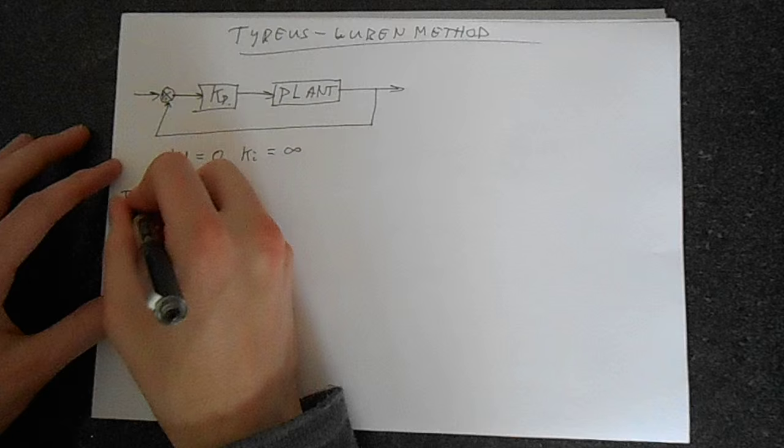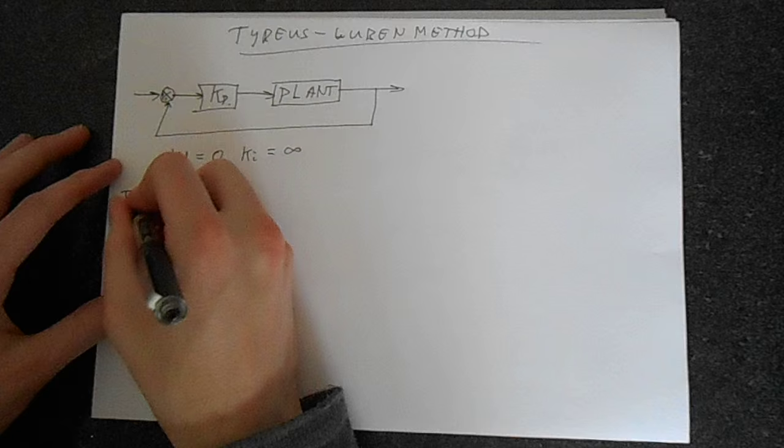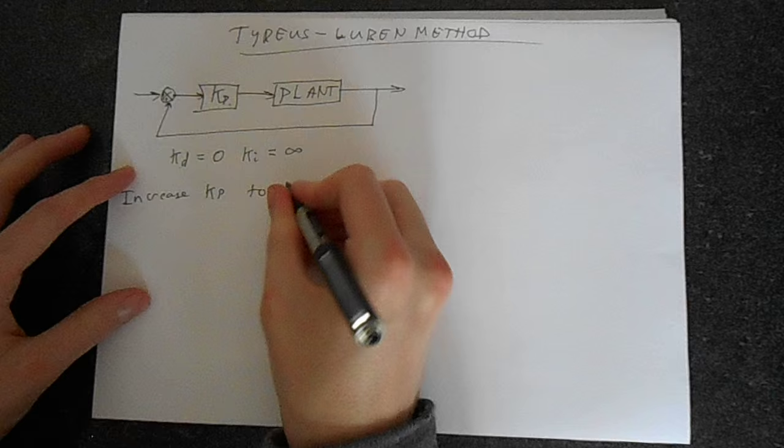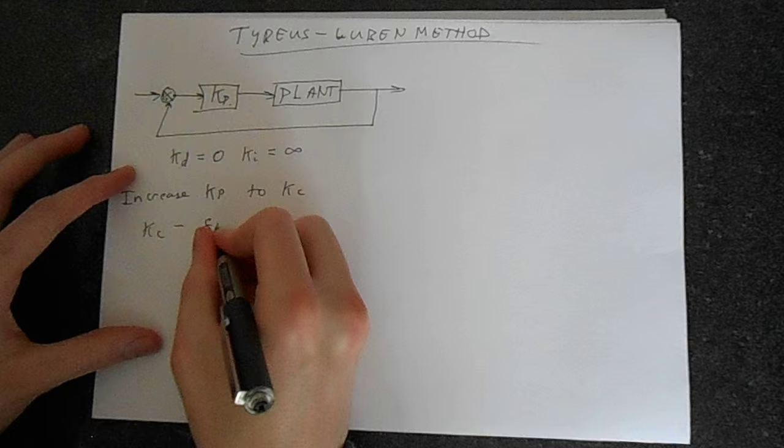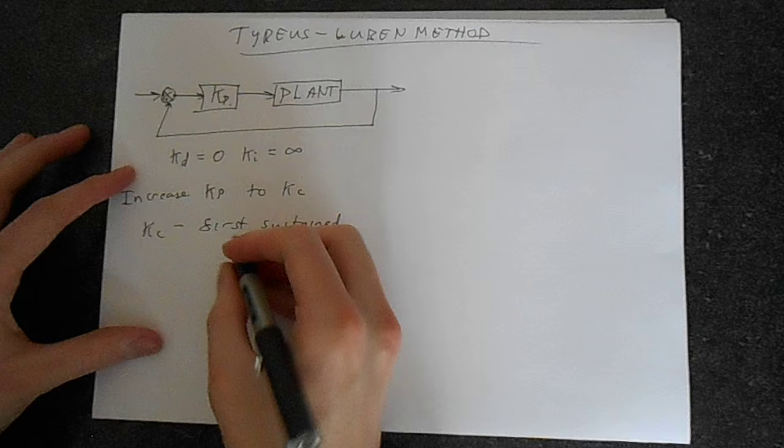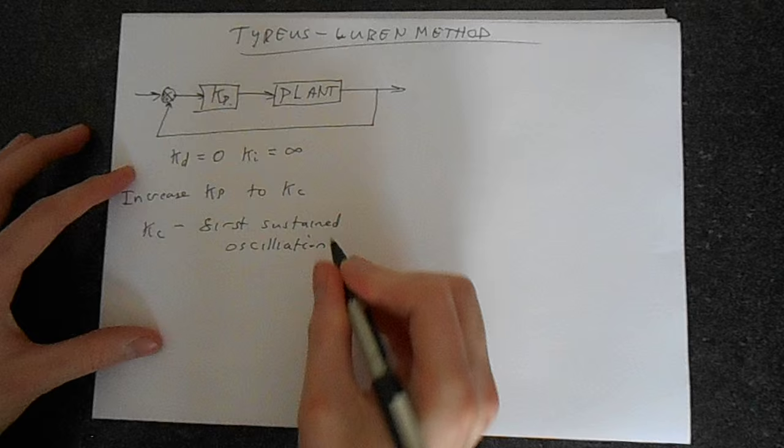Now what we do is we increase the gain KP to some value we're going to call KC, and KC is the first sustained oscillation. You keep increasing KP until you get a sustained oscillation, the very first point at which the response becomes oscillatory.